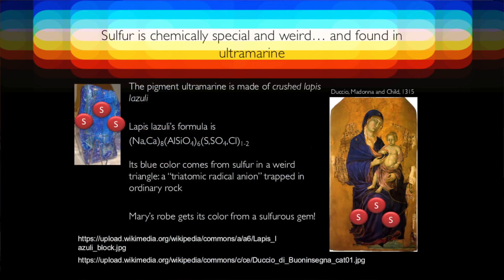So the sulfur chemistry is weird and different, and this shows up in art as well. Sulfur is found in ultramarine, which is crushed lapis lazuli — a semi-precious gemstone. I was wondering what made it blue, and I looked at the formula. Everything in there is very normal; the weirdest thing is the sulfur. Its blue color actually does come from the sulfur, which is in a weird triangle — it's trapped as a triatomic radical anion. It's really weird, just trust me. It's trapped in the rock, and that is blue. When you grind it up and paint it on a picture, you get Mary's blue robe. So this is actually crushed gemstone, or you can say it's crushed sulfur — a weird metabolite.